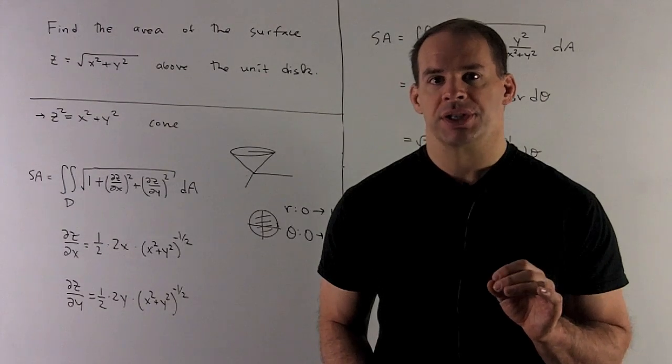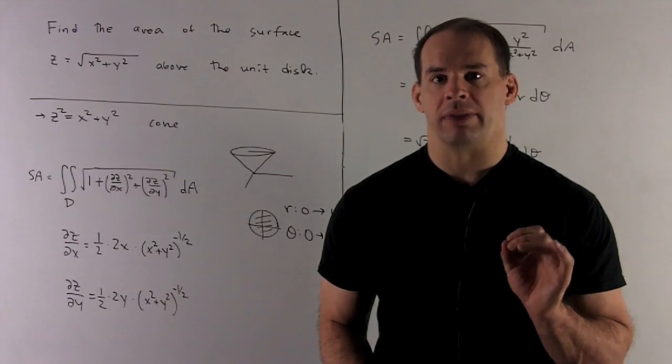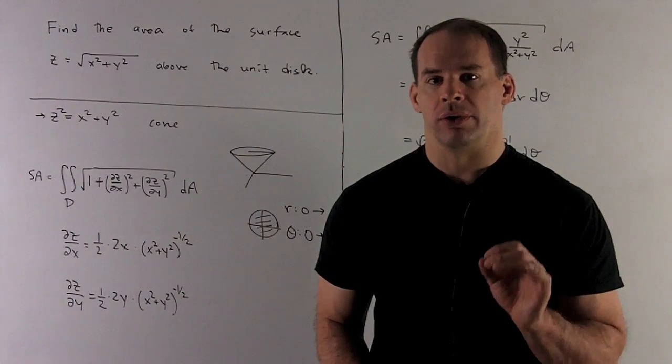Find the area of the surface z equals square root of x squared plus y squared over the unit disk.